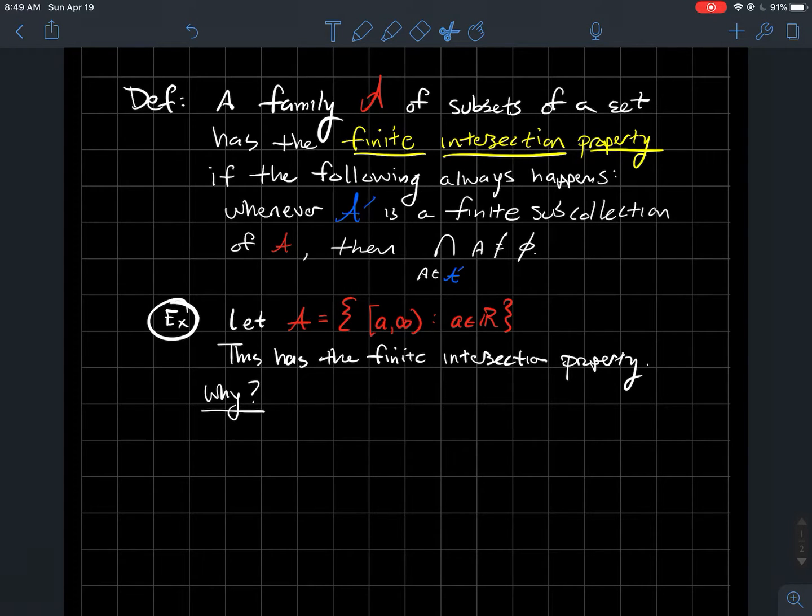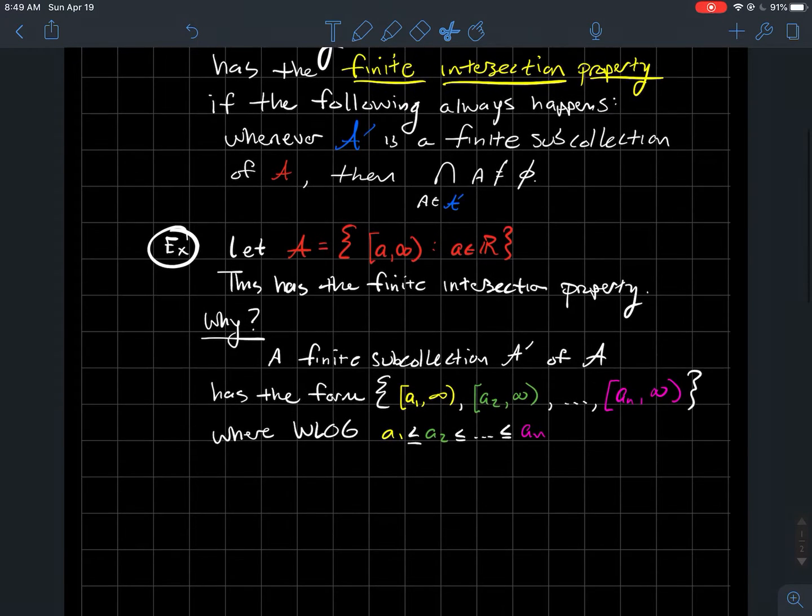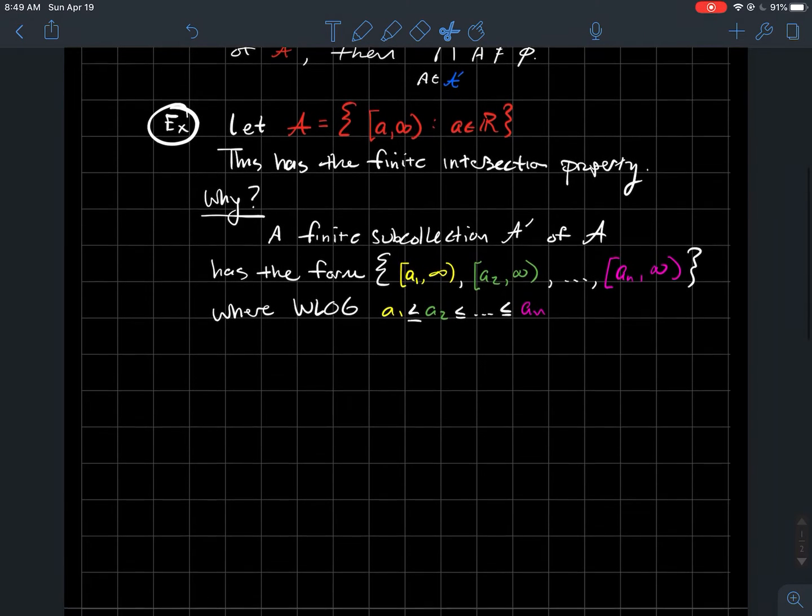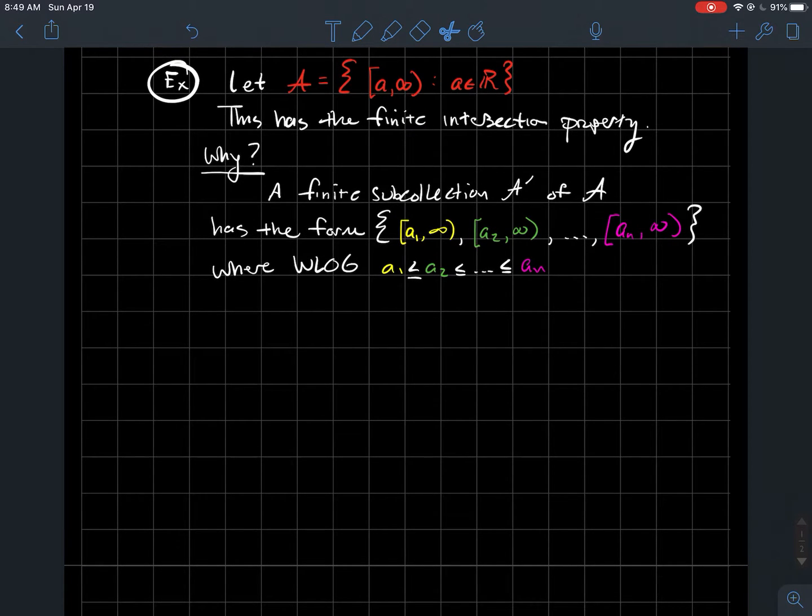What do we need to do? We need to look at any finite subcollection of fancy A and check if the intersection is always non-empty. Any finite subcollection means you're taking finitely many intervals, and we can list them out. We can relabel the left endpoints if necessary. Without loss of generality, I'll assume a₁ ≤ a₂ and so on, so they go in increasing order.